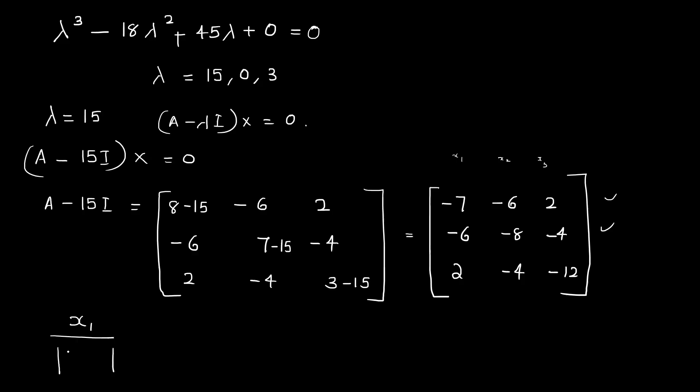Setting up cross-multiplication for x1: using the submatrix entries minus 6, 2, minus 8, minus 4.